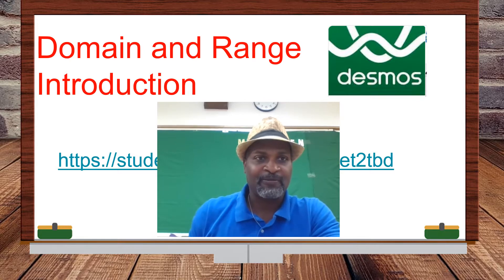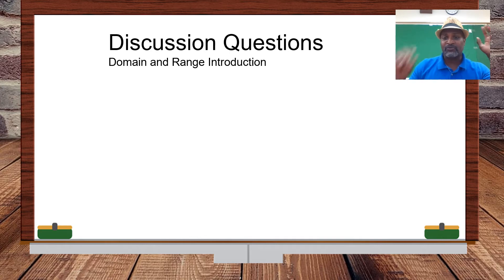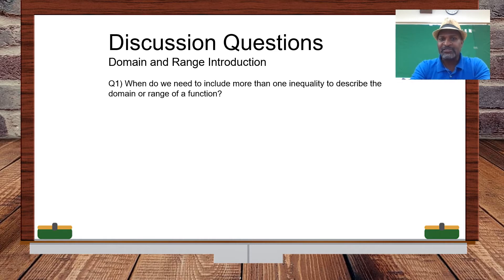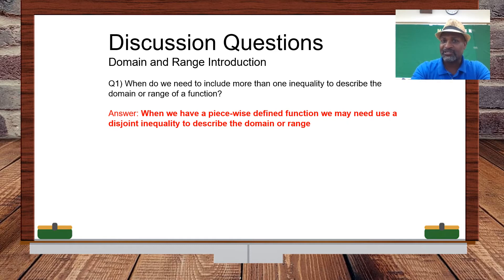Let's summarize three important things that come out of the introduction to domain and range activity in Desmos. First question: when do we need to include more than one inequality to discuss the domain and range of a function? That happens when we have a piecewise function — a discontinuous, pieced-together function — where we may need to use a disjoint inequality or more than one inequality to describe all of the domain and range.